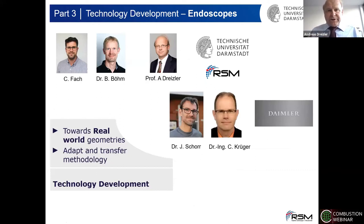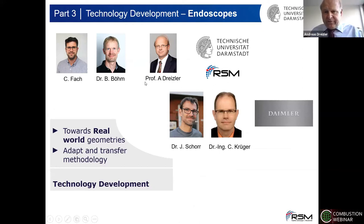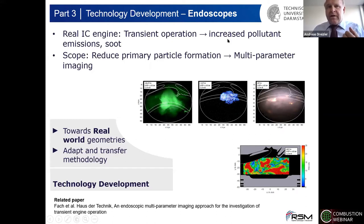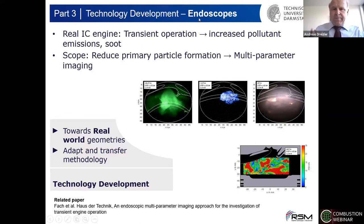I would like to switch gears to the third chapter, technology development, where our idea is to adapt and transfer our methods into real-world geometries. This is done by PhD student Christian Fach, supervised by Benjamin and myself, in collaboration with Daimler. I've selected an example where we developed an endoscope to look into real IC engines, specifically into transient operations where polluted emissions and soot increase tremendously. To better understand what's going on in the engine, we performed multi-parameter imaging with an endoscope, operating with a real production-type single-cylinder engine.